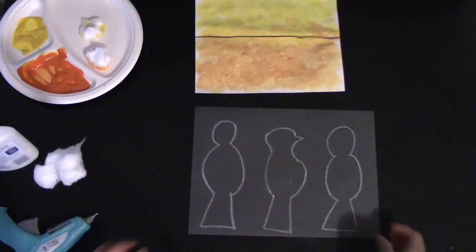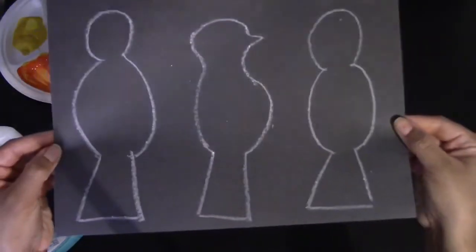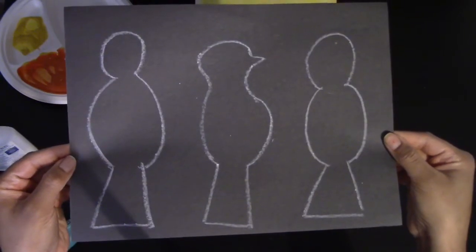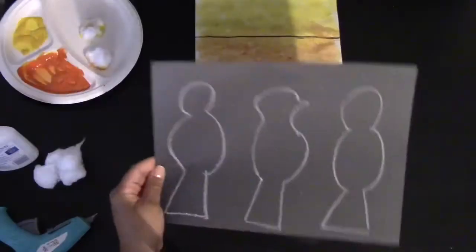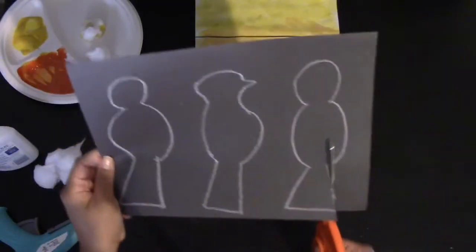And there you go. All three of your birds. Once that's complete you can go ahead and take your scissors that you will use with a parent and begin cutting out your birds.